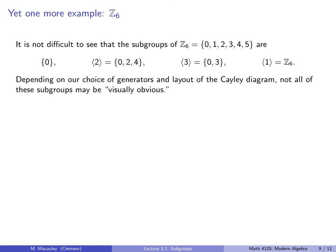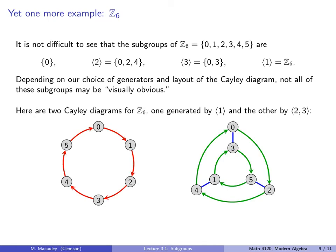Now depending on our choice of generators and layout of the Cayley diagram, not all of these subgroups may be visually obvious. For example, here are two Cayley diagrams for Z6. The one on the left corresponds with the generating set of just 1, that's the red arrow. And the diagram on the right corresponds with the generating set of 2 and 3. And I want to emphasize that this group is cyclic, and that just means it can be generated by a single element. It doesn't mean that it has to be.